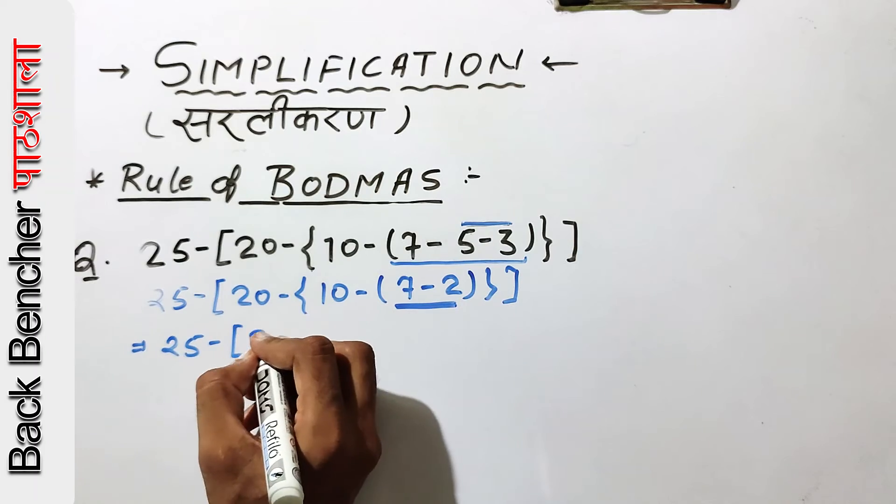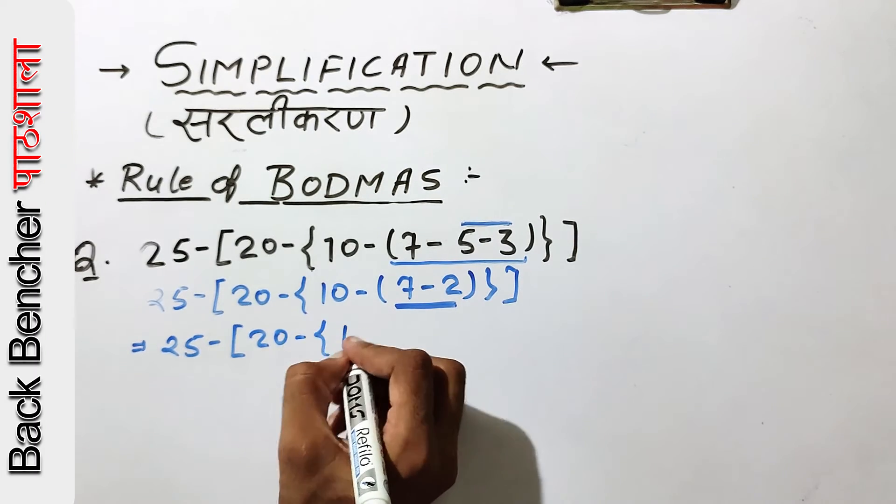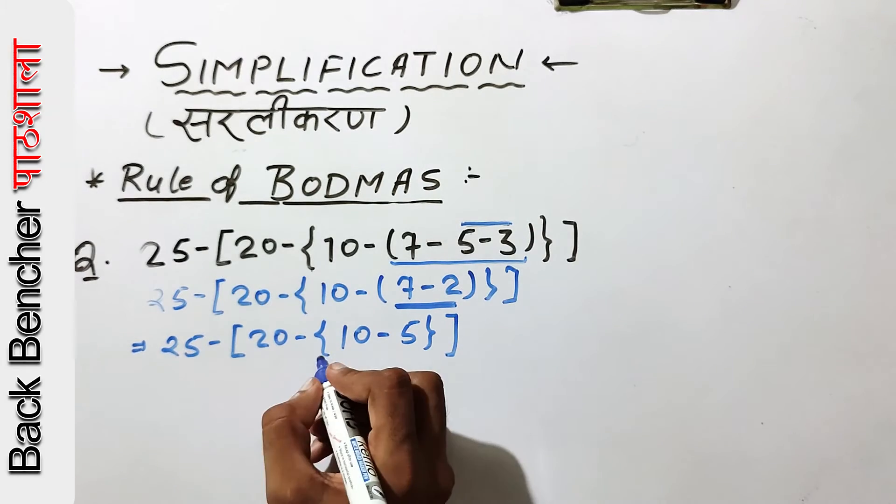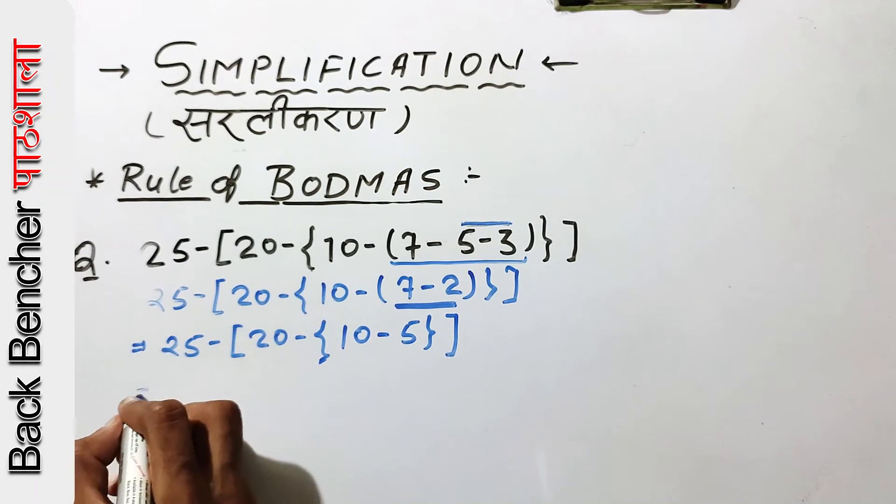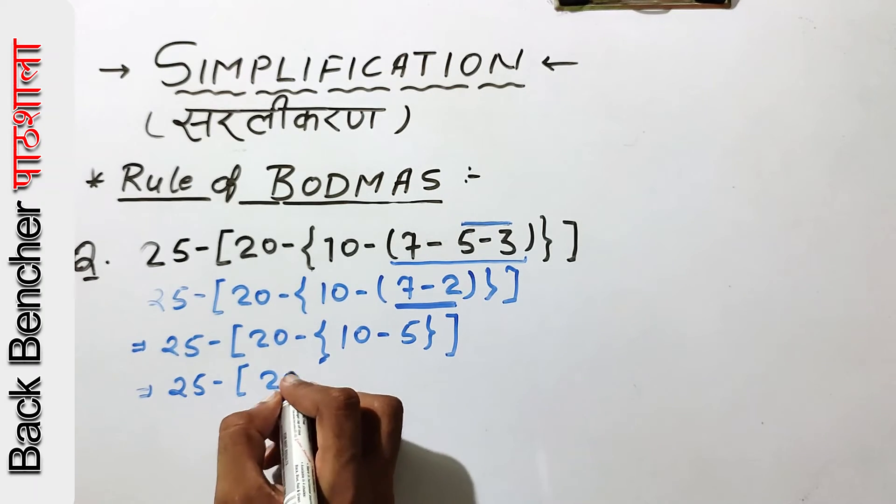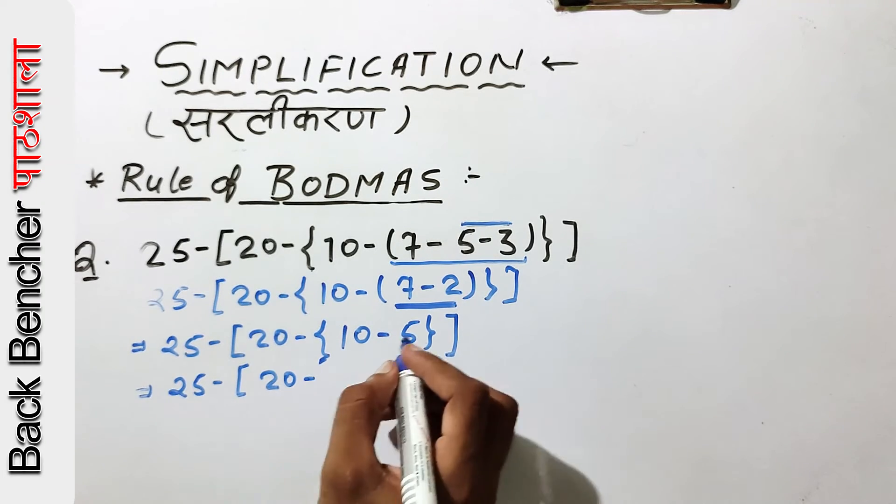25 minus 20 minus 10 minus 5. We have 2 brackets solved. Now we will solve this bracket. In this way, step by step, our equation will not be wrong. We will have the right answer. This will be 5.